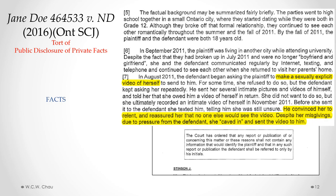The facts involved high school sweethearts in a small Ontario town. When they graduated, the plaintiff moved away for university. The couple officially broke up but continued to see each other romantically off and on, keeping in touch online, via text messages, and by telephone. By the fall of 2011, they were both 18 years of age. The defendant repeatedly asked the plaintiff to send him a sexually explicit video of herself. Even though she refused, he kept asking and pressuring her, even sending intimate pictures and videos of himself to her. Eventually she relented with the defendant's promise that no one else would see the video.